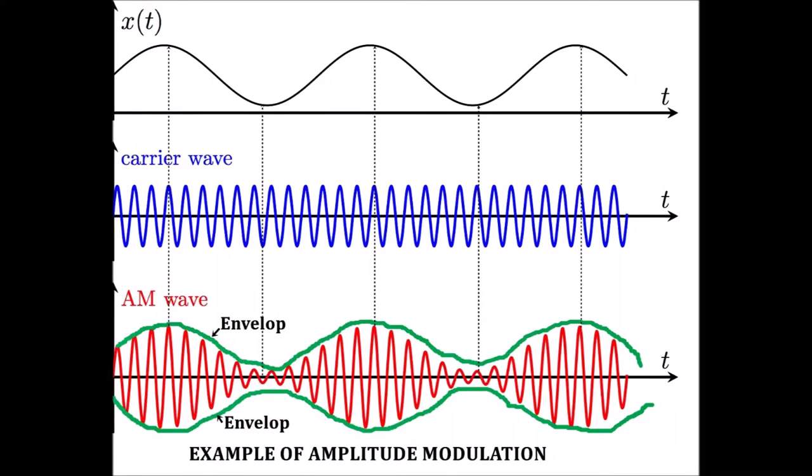Amplitude modulation (AM), like AM radio, is a modulation technique used in electronic communication, most commonly for transmitting information via a radio carrier wave. In amplitude modulation, the amplitude, or signal strength, of the carrier wave is varied in proportion to that of the message signal being transmitted.